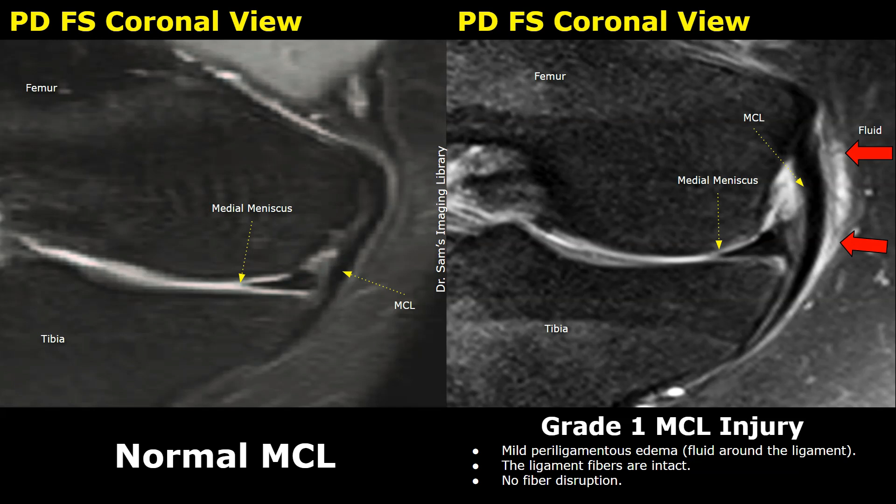Grade 3 is a complete tear — the ligament is totally disrupted and the knee feels unstable. We use MRI to assess how bad the injury is, and treatment depends on the grade. Most heal well with rest and physical therapy, but severe cases may need bracing or even surgery.